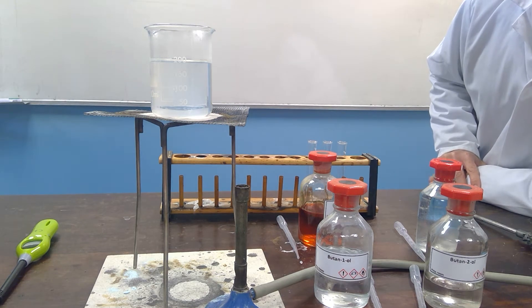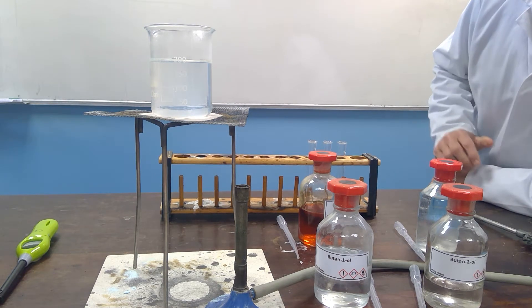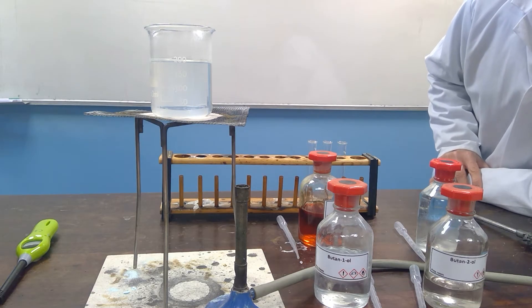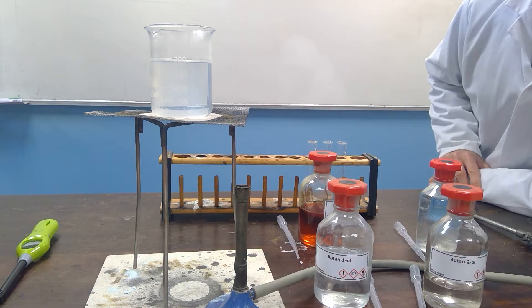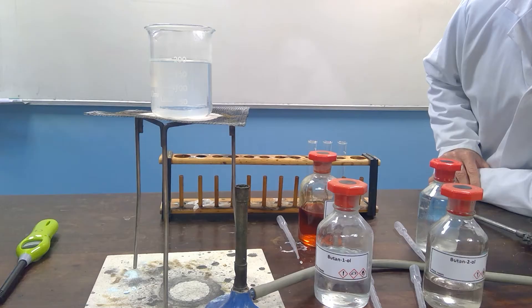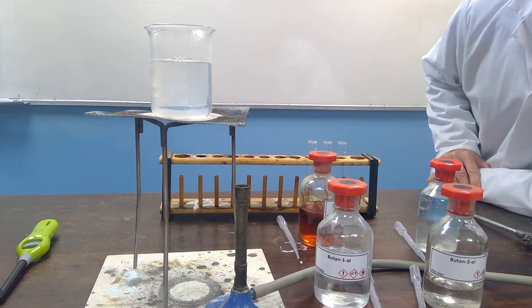This short video shows the reactions of a primary, secondary and tertiary alcohol with acidified potassium dichromate. In the Rugby School practical the three alcohols are labeled A, B and C for you to identify which is the primary, secondary and tertiary.